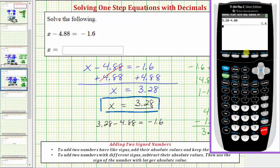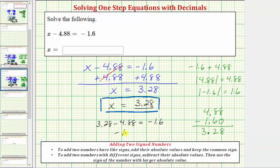So we have negative 1.6 equals negative 1.6, which is true, and therefore our solution is correct. I hope you found this helpful.